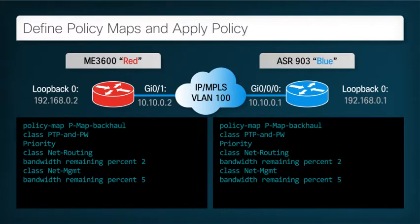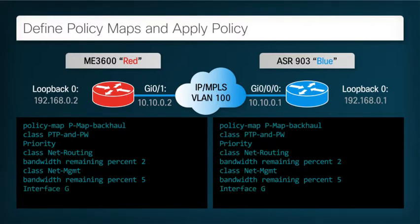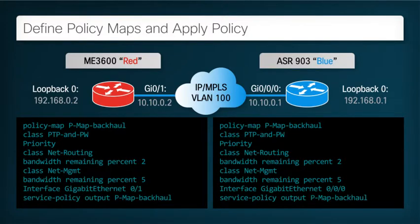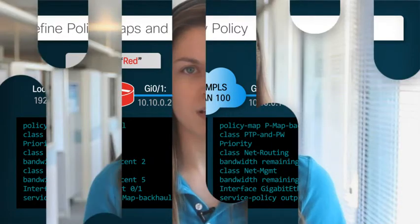The final step in the QoS configuration is to apply these policy actions to an interface. Here we see that the policy map is applied to the interface between the routers as an output service policy. Remember that this is a minimal QoS configuration to complete our solution. When considering a more complex network with many other types of traffic, a more extensive QoS scheme will probably be required.